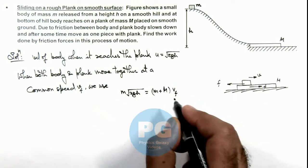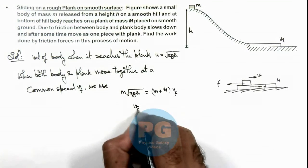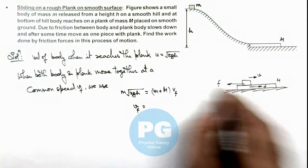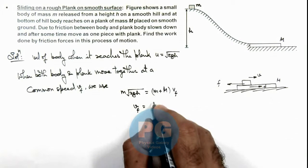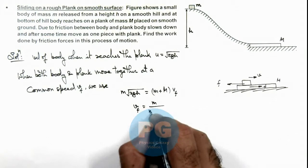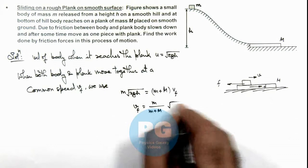So this will give us the value of final speed with which both the bodies are moving as a single piece that is m by m plus capital M times root 2gh.